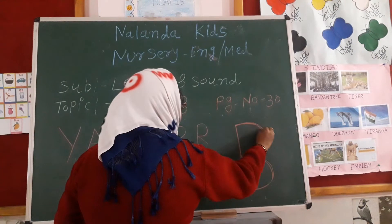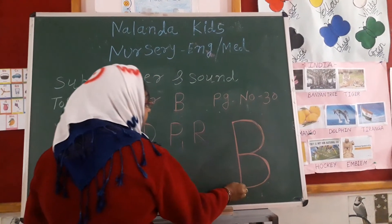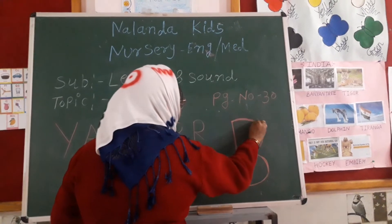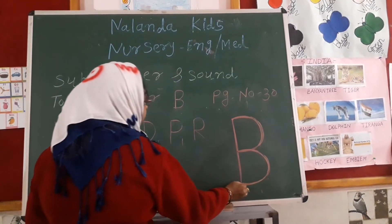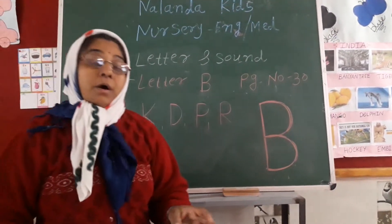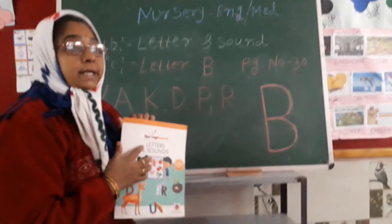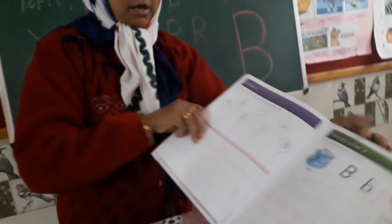B for Bat, B for Ball, B for Balloon, B for Butterfly, B for Burn, and the B sound is 'ब'. We need to take our Letter and Sound Part 2 book and open to Page Number 13.